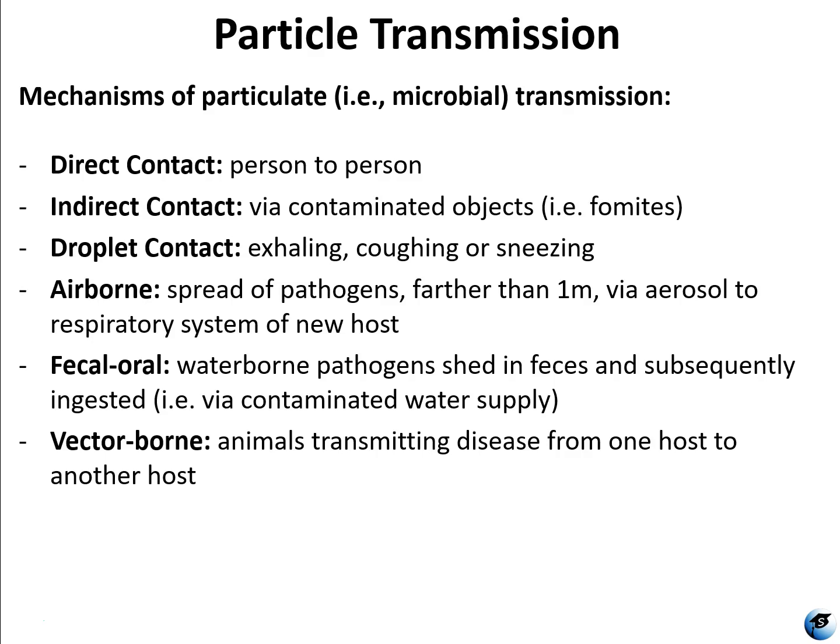Direct contact transmission is pretty self-explanatory — it's from person to person, from host to host. Indirect contact transmission usually involves a contaminated object, also known as a fomite. A fomite is an inanimate object that potentially transmits pathogens. Fomites facilitate indirect transmission when they come into contact with a particulate and subsequently come into contact with a host.